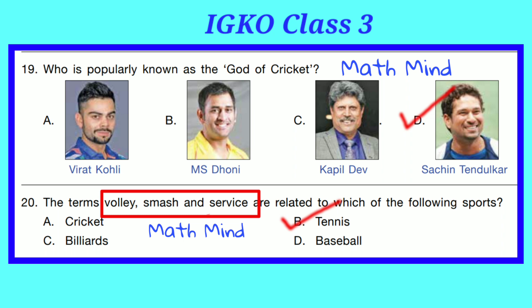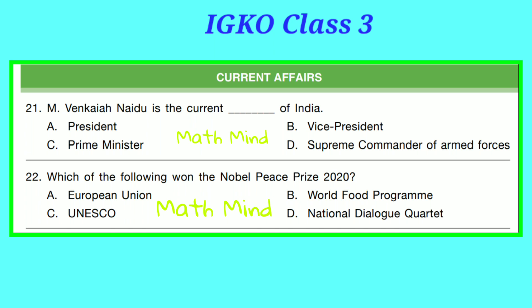Current Affairs. Question No. 21. Mr. Venkaya Naidu is the current Vice President of India. Option B is correct. Ramnath Kovind is President of India and Narendra Modi is Prime Minister of India. The President is the Supreme Commander of the Armed Forces.